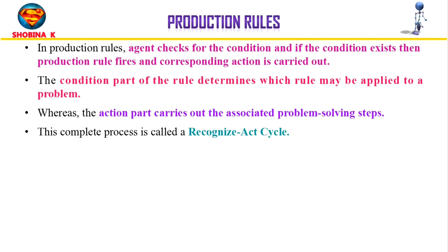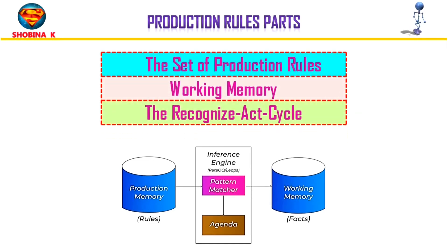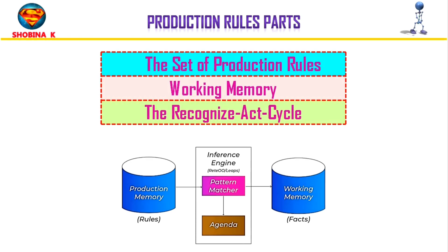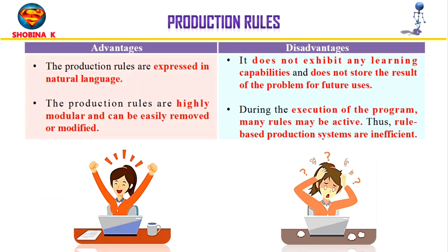The final technique is production rules. In production rules, an agent checks for a condition, and if the condition exists, the production rule fires and the corresponding action is carried out. The condition part determines which rule may be applied to a problem, while the action part carries out the associated problem-solving steps. This complete process is called the recognize-act cycle. The system consists of three parts: the set of production rules, working memory, and the recognize-act cycle. Advantages: expressed in natural language, highly modular. Disadvantages: no learning capabilities, does not store results for future use, and many rules may be active simultaneously, making it inefficient.